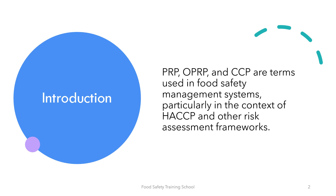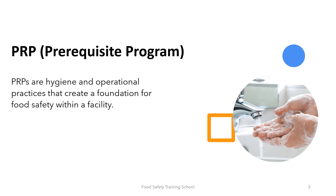Let's break down each term and provide some examples. PRPs or prerequisite programs are basic hygiene and operational practices that create a foundation for food safety within a facility. They are general practices that apply to the entire production environment and contribute to maintaining a clean and safe facility. PRPs are not considered critical control points, but they provide essential conditions for ensuring food safety.